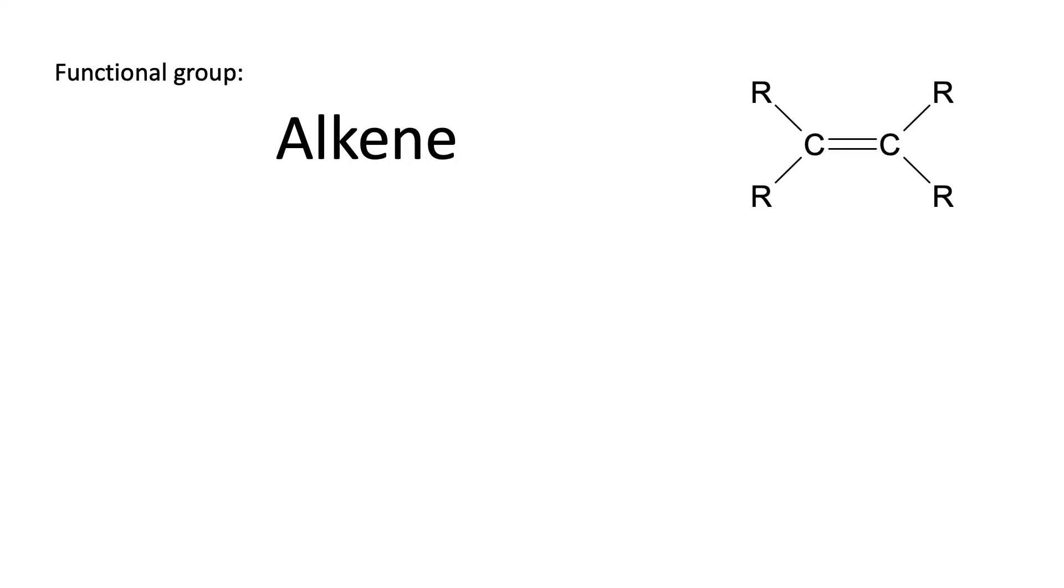The first functional group we're going to have a look at is the alkene group. Now the test here is one that you've come across at GCSE chemistry as well as at A level chemistry, and you may remember it's to add bromine water and of course we need to shake it to make sure we get a good result.